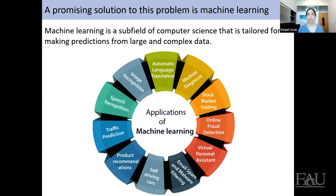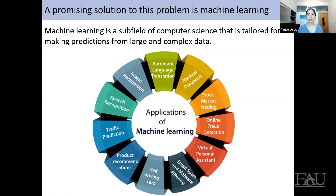A promising solution is machine learning, a subfield of computer science tailored for these very complicated problems — making predictions from large and complex data that often have conflicting signals. Machine learning is already applied in many fields: image and facial recognition, self-driving cars, stock market trading, fraud and spam detection, and even product recommendations, such as Amazon learning about your behavior to make suggestions.